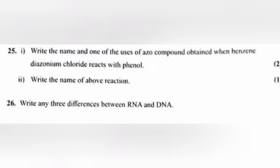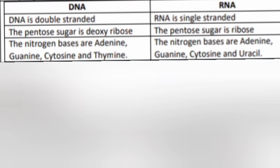Question 26: Write any three differences between RNA and DNA. Answer — DNA: double-stranded; RNA: single-stranded. DNA: the pentose sugar is deoxyribose; RNA: the pentose sugar is ribose. DNA: nitrogen bases are adenine, guanine, cytosine, and thymine; RNA: nitrogen bases are adenine, guanine, cytosine, and uracil.